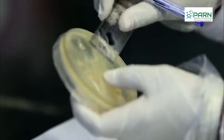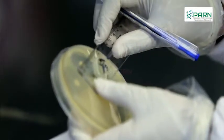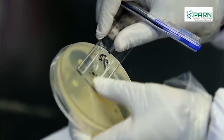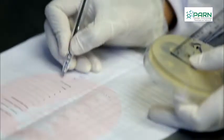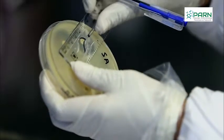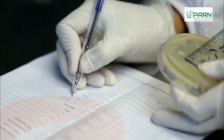Measure the zone sizes to the nearest millimeters using a ruler. Viewing the back of the petri plate, hold the plate on a non-reflecting surface with reflected light.